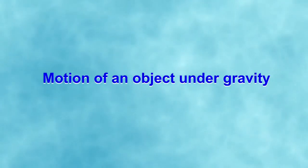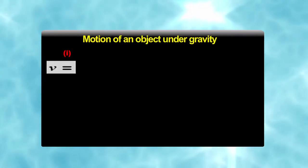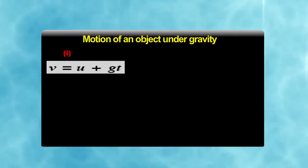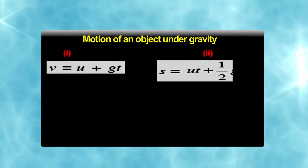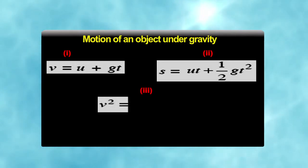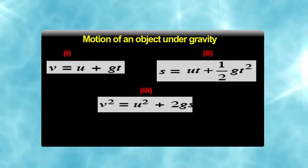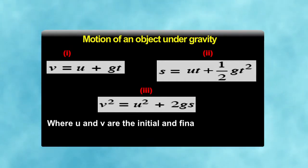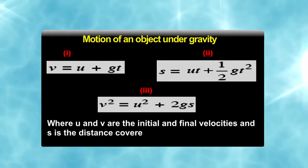Motion of an object under gravity modifies Newton's law of motion. That is, equations of motion are written as V, the final velocity, is equal to U initial velocity plus gt. Second equation is modified as S, the distance, is equal to Ut plus half gt square. And the third equation is V square is equal to U square plus 2gs. Where U and V are the initial and the final velocities and s is the distance covered in time t.